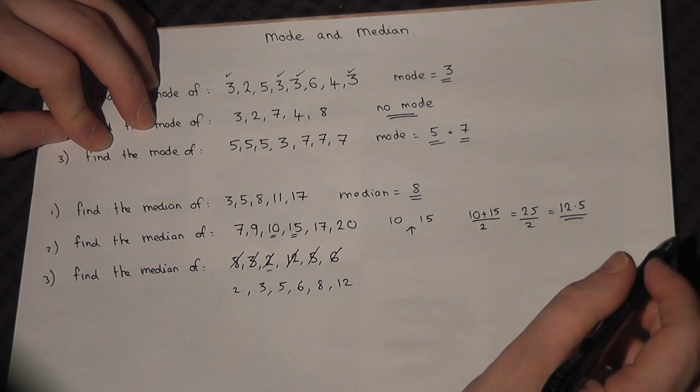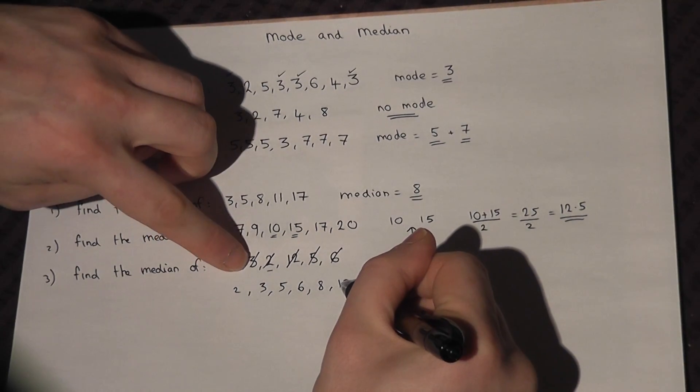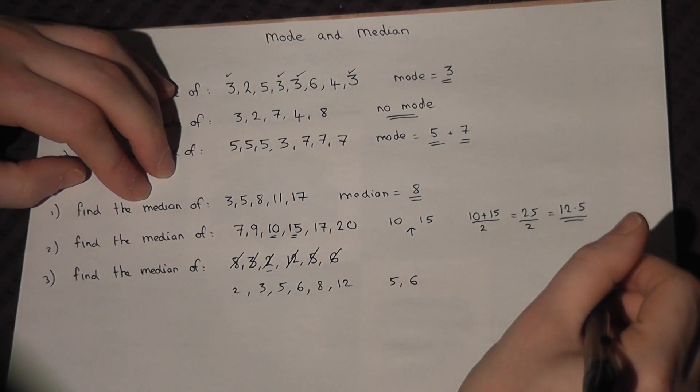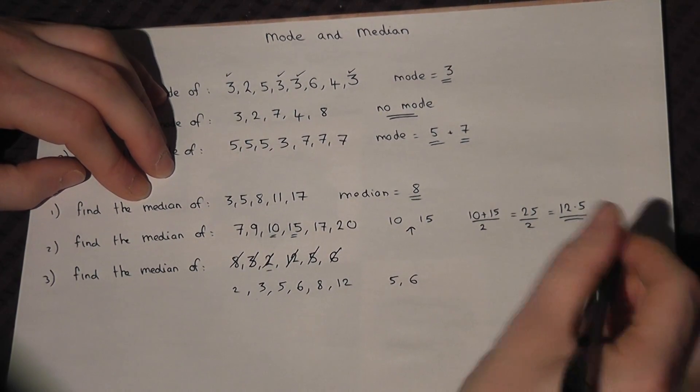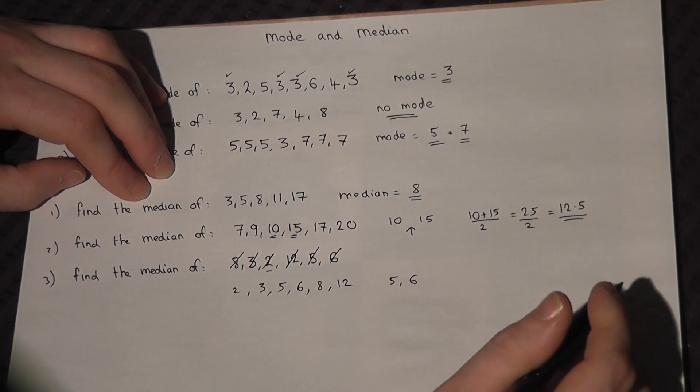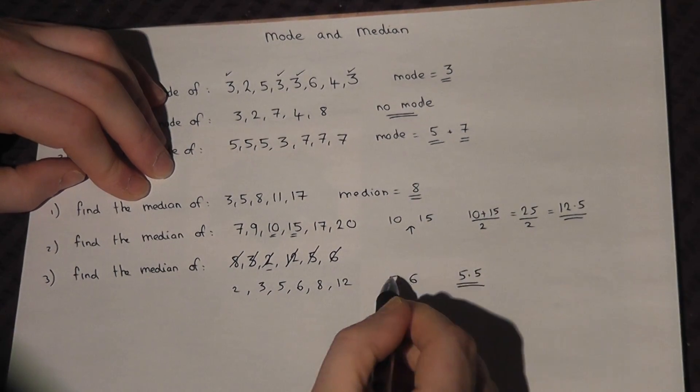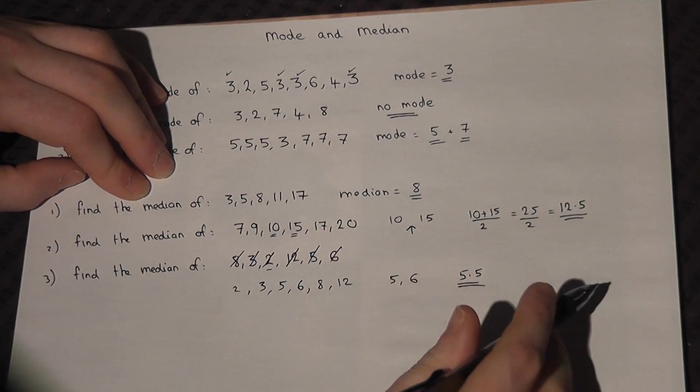Now once the numbers are ordered, you count in from the outside. So 5 and 6. There are two central numbers. And the number halfway between these two numbers is 5.5. Again, if unsure, add them together and divide by 2.